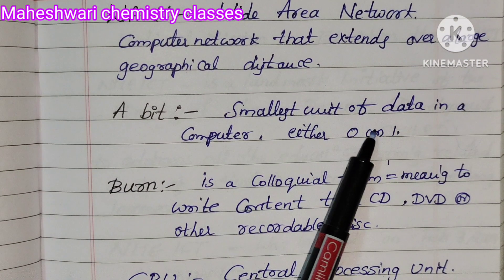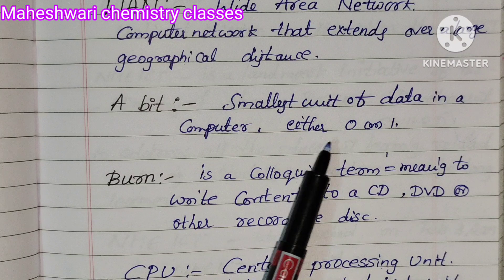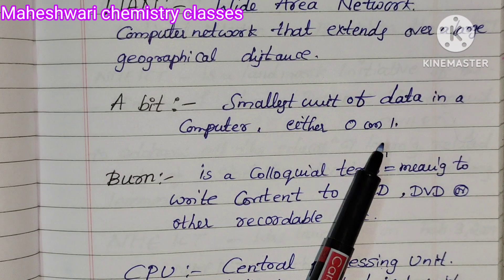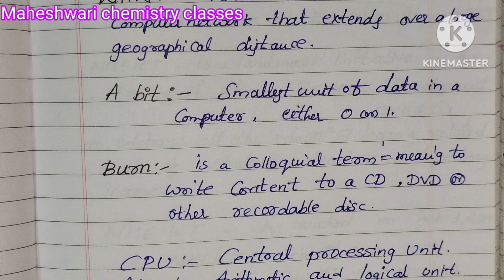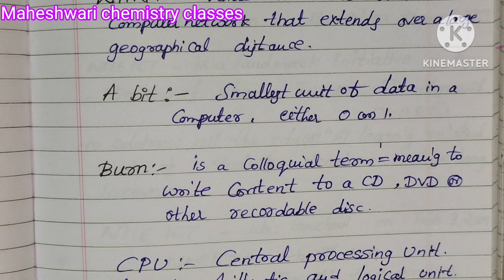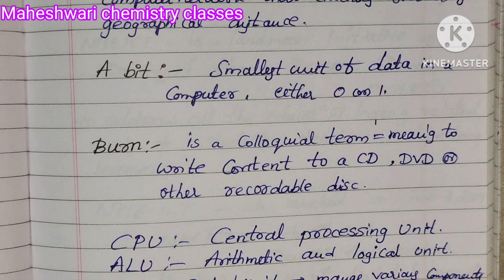A bit is the smallest unit of data in a computer — either zero or one. Computers store data in terms of either zero or one, which is called a bit.